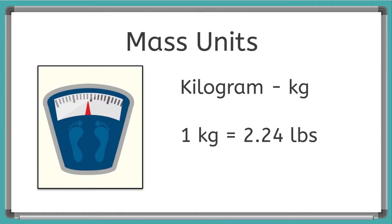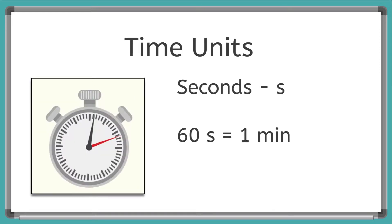For mass, we use the unit kilogram. When we're using the unit in an equation, we use the letters kg to represent kilogram. A kilogram is about two times heavier than one pound. For time, we use the unit seconds. When we are using the unit in an equation, we use the letter s to represent a second. As you probably already know, one minute is made up of 60 seconds.